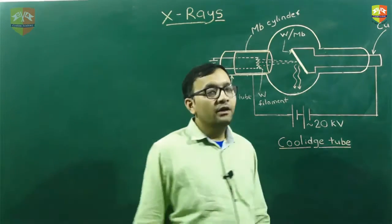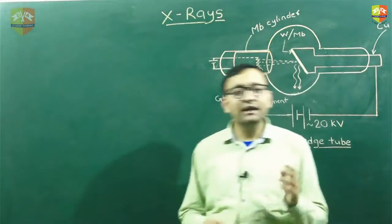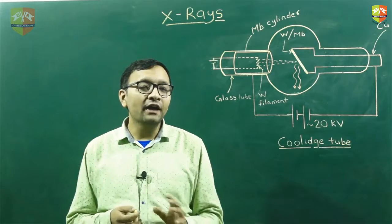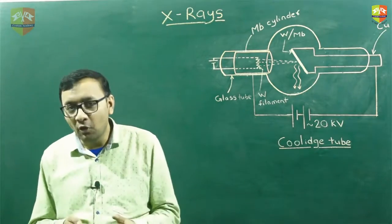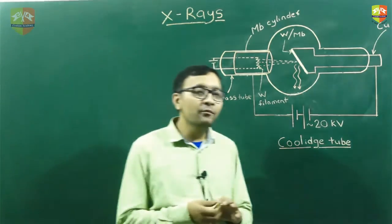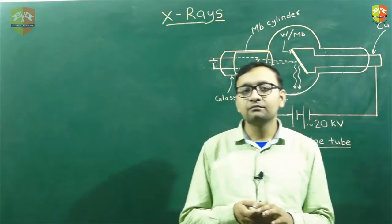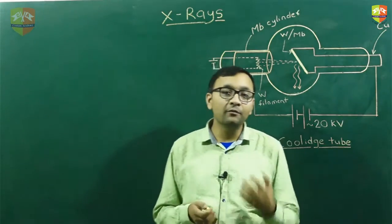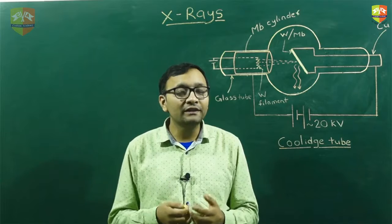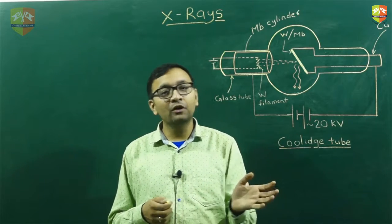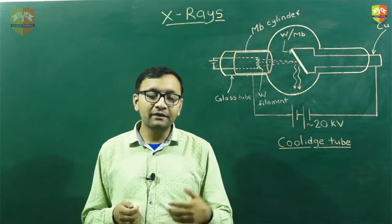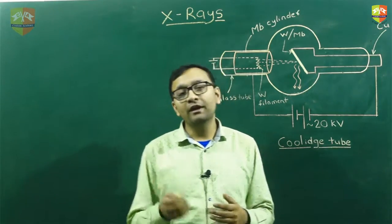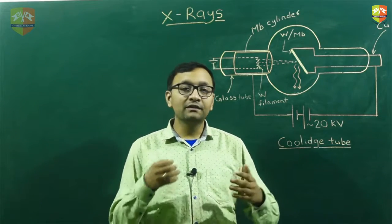Today we are going to take up the topic of X-rays. X-ray is an electromagnetic radiation, and the study of EM waves was being done for centuries. The first source studied was sunlight, and people started understanding EM waves by analyzing the wavelengths in sunlight. The visible spectrum was easy to find, and then due to the phenomena of radioactivity, they came to know about gamma rays as well.